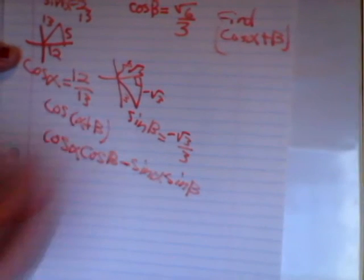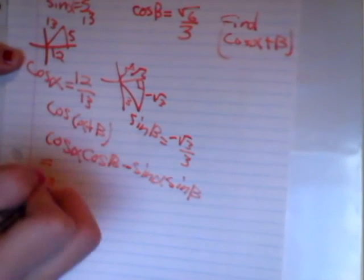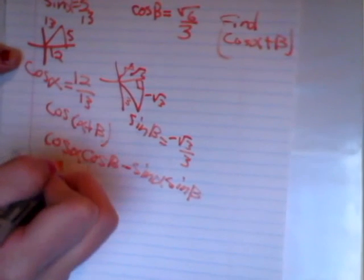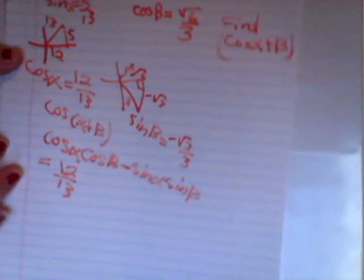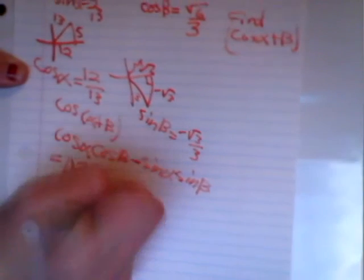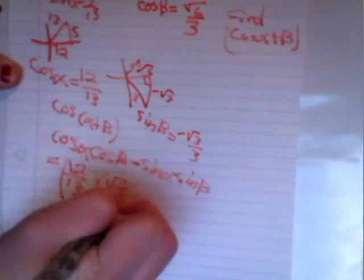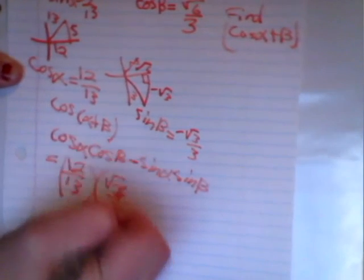And now we're just going to fill it in. So we have, for the cosine of alpha, we found that, which was 12 over 13. And the cosine of beta was given to us. It was square root of 6, all over 3.